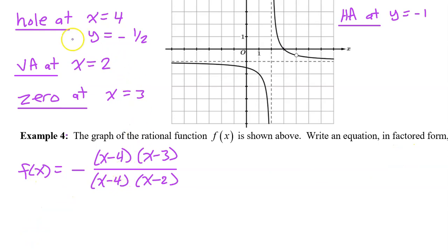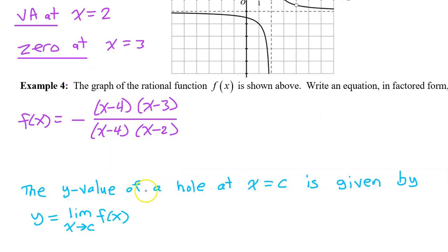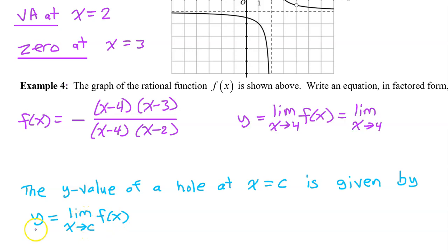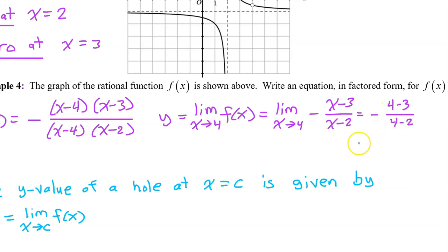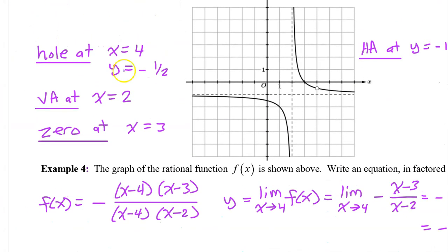Now let's check our function to see what the y value of the hole would be and whether it's anywhere near negative one half. The y value of a hole at x equals c is the limit of f of x as x approaches c. The limit as x approaches 4 of f of x equals the limit of the function after canceling out the hole: negative x minus 3 over x minus 2. By direct substitution, plugging in 4 for x, this simplifies down to negative one half — exactly what we see on the graph. So no change required; this is the answer.